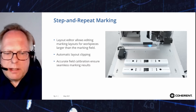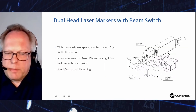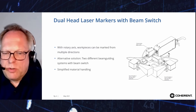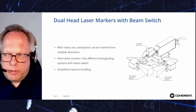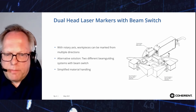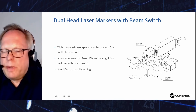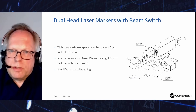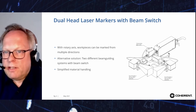On the next slide, we see an alternative approach. Step-and-repeat marking is possible with rotary axes too, so parts can be marked from multiple directions. If marking from only two directions is required, a beam switch is an alternative to using rotary axes, which simplifies material handling.